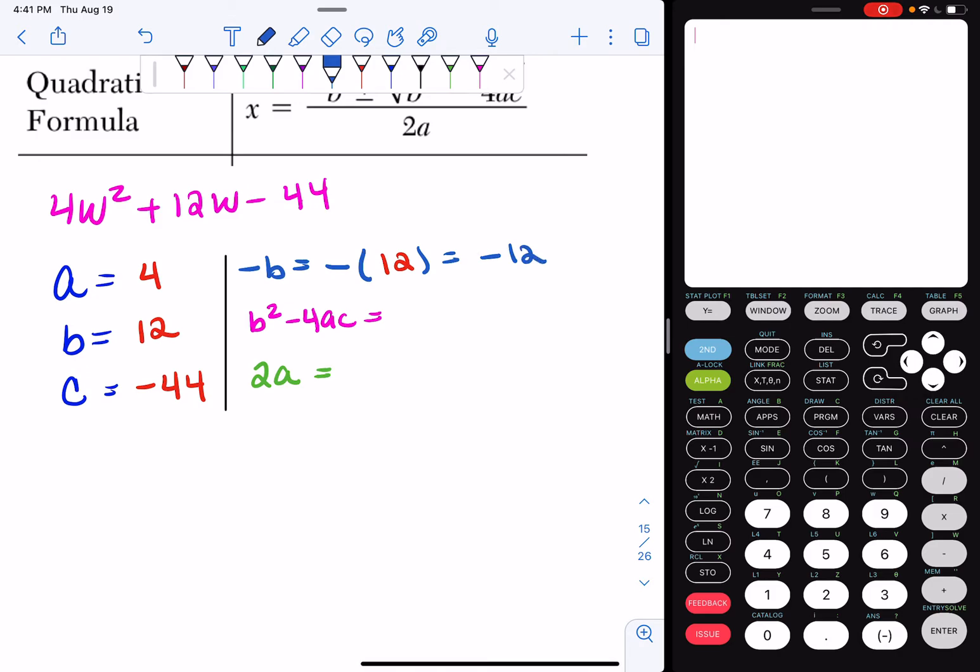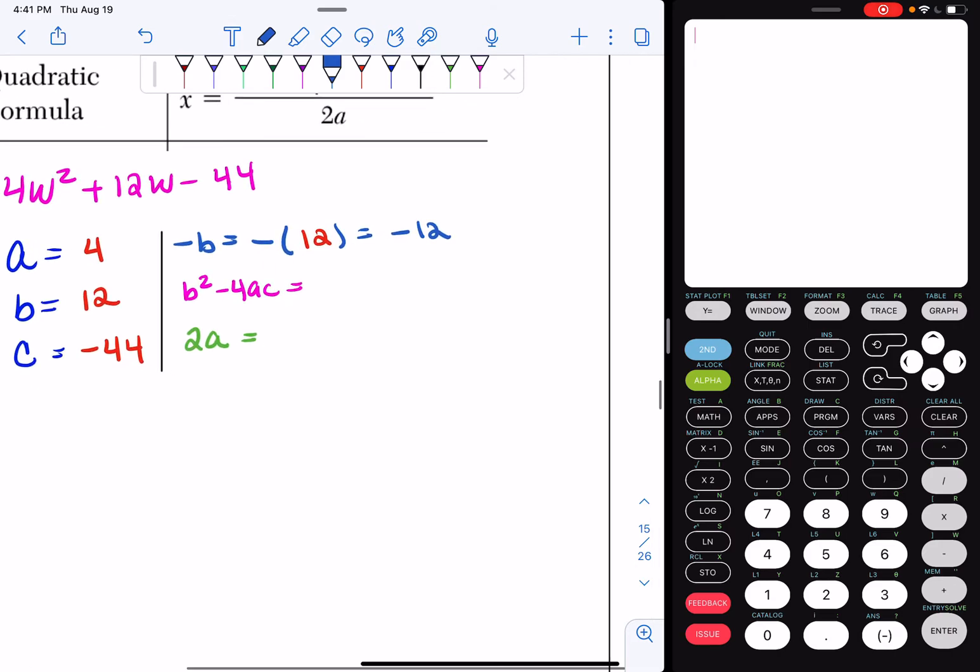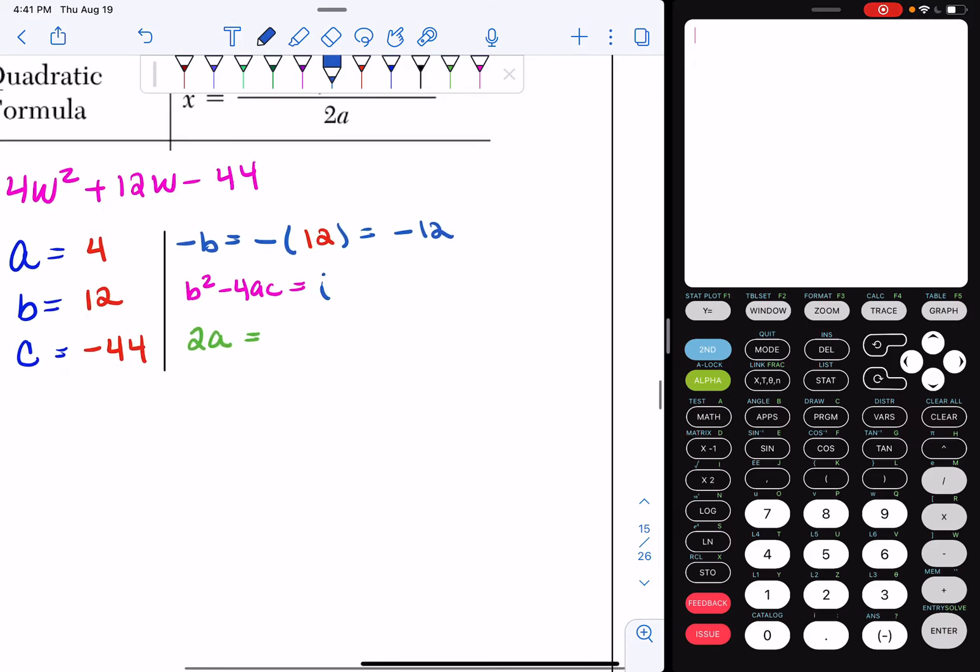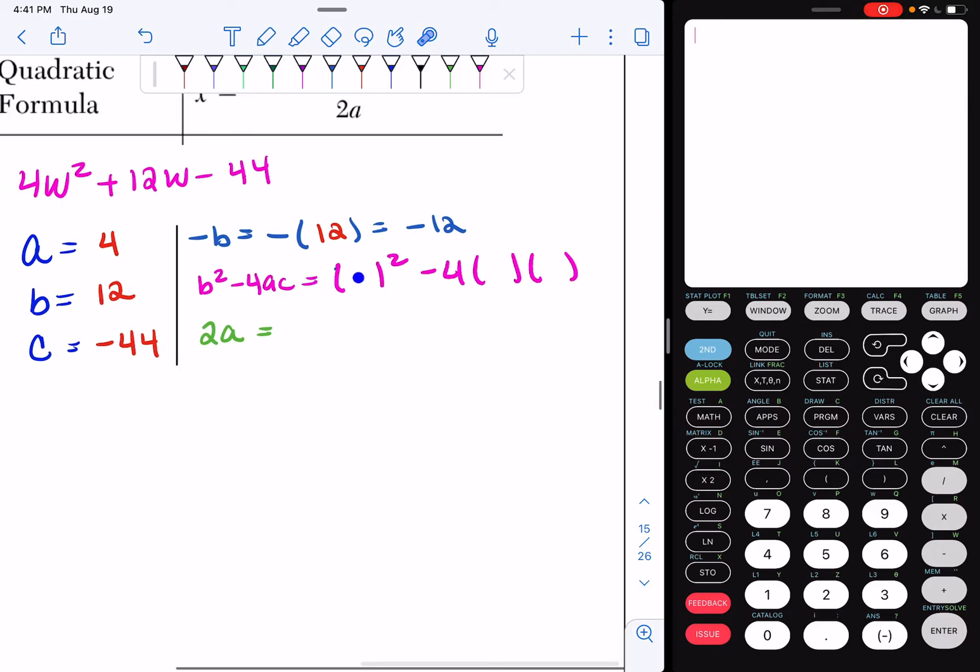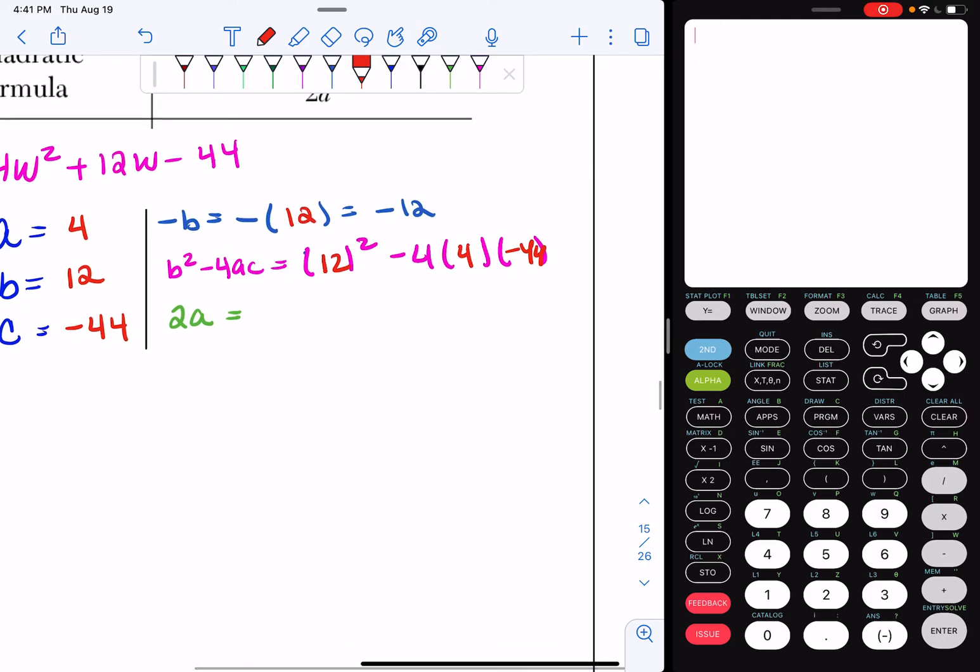Now, b squared minus 4ac, I'm going to take my b value, square it, subtract 4, and multiply it by my a value and my c value. So our b value is going to be 12. My a value is going to be 4. And my c value is going to be negative 44. And we're going to just type that into our calculator. Parenthesis 12, square it, subtract 4, and multiply it by your a value and your c value. Make sure it's written correctly and you get 848.